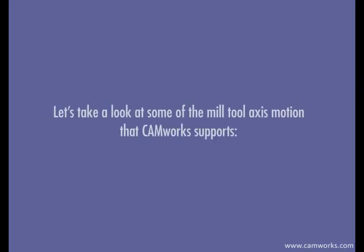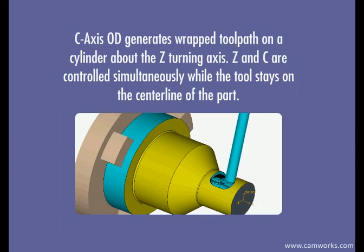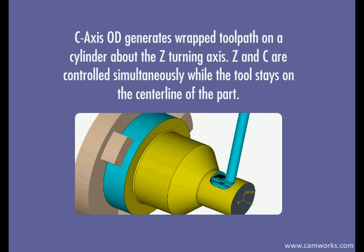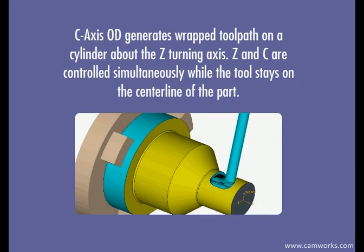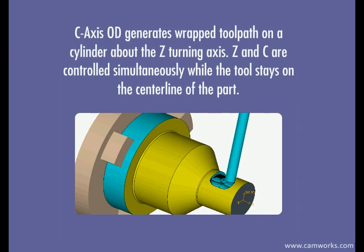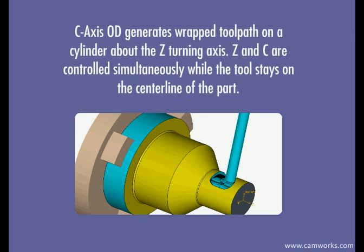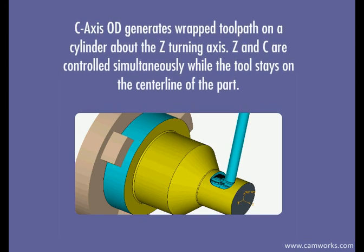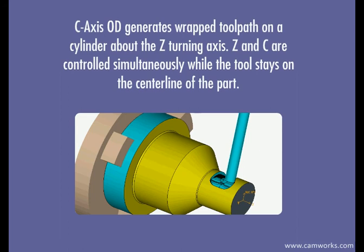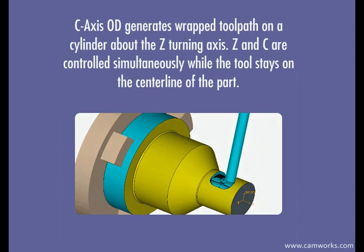Let's take a look at some of the MillTurn axis motion that CamWorks supports. C-axis OD generates a wrapped toolpath on a cylinder about the Z-turning axis. Z and C are controlled simultaneously while the tool stays on the centerline of the part.